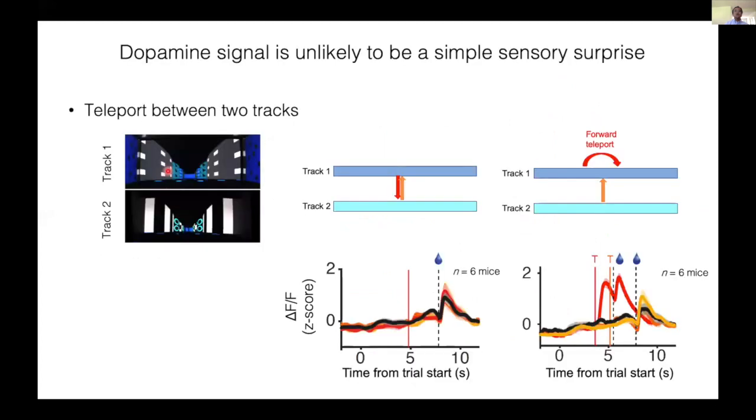One question that you may have at this point is whether the signals that we observed are just a sensory surprise. To address these questions, we performed teleports between two different tracks. In the middle of running, the mouse was teleported from one track to the other track occasionally. If dopamine neurons respond to a sensory surprise or sensory prediction error, we should see a response, but we did not observe such a response. As a control, we also performed a forward teleport with the same animals, which evoked a big response as in the previous results.